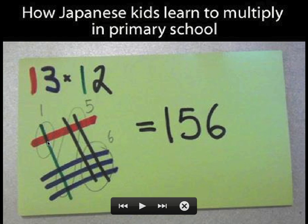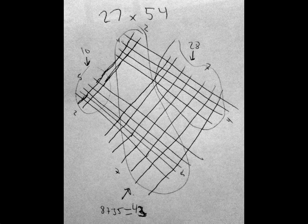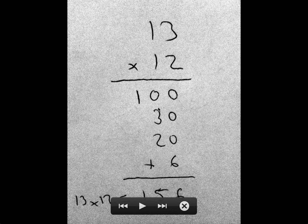That's exactly the same as the 100, the 30, the 20, and the six right here. So really the operation is exactly the same. It's identical. It's just being represented a different way.